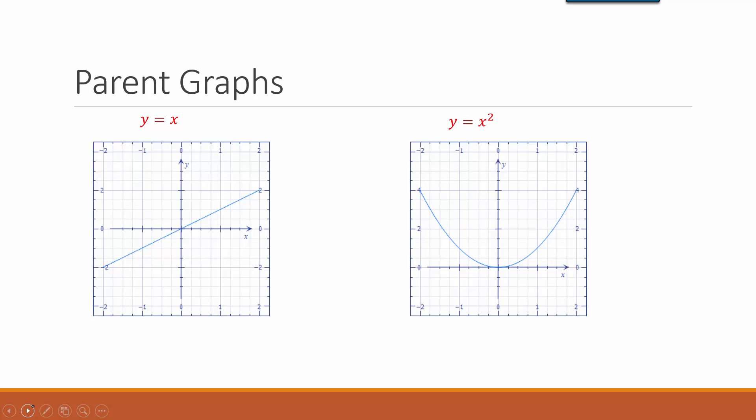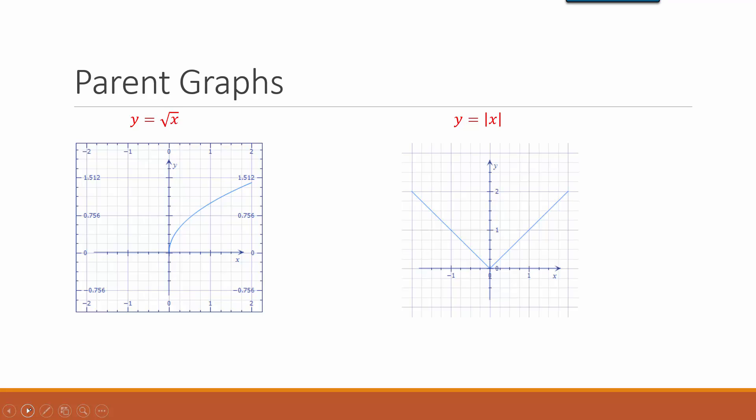Y equals x, where you don't have any exponents or square roots — x to the first power — would be a linear equation and would produce a straight line. Y equals x squared is a quadratic equation and produces what we call a parabola, a U-shaped figure. Y equals the square root of x would make a single curve figure. And y equals the absolute value of x would make a V-shape. Keep those shapes in mind when you're getting ready to graph equations.